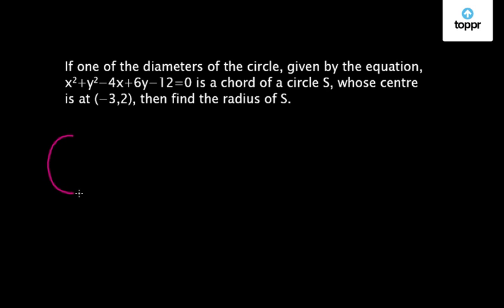A circle which is given by the equation x² + y² - 4x + 6y - 12 = 0. So let us say this is circle S1 and now there is another circle S.